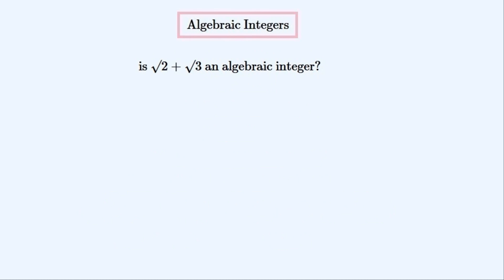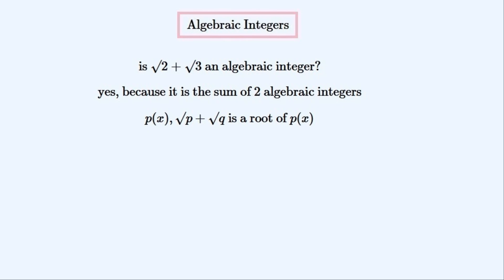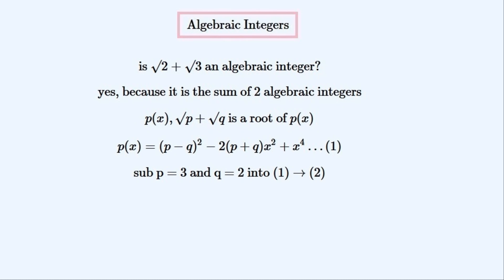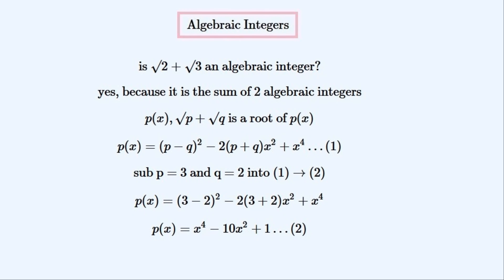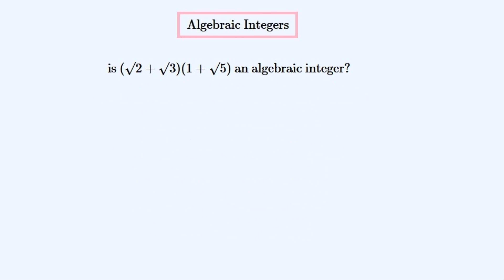Is this number an algebraic integer? Yes it is, because it's the sum of two algebraic integers that we looked at earlier. And because this set of numbers is a ring, the sum of two algebraic integers is also an algebraic integer. Let's find the monic polynomial for which it is a root. This is the general formula for the monic polynomial for a root of this form. We can substitute these specific values in and simplify to get the monic polynomial. Can you tell just by looking at this next number whether it's an algebraic integer? It is, because it is the product of two algebraic integers, so we don't have to expand or simplify the expression to work this out.